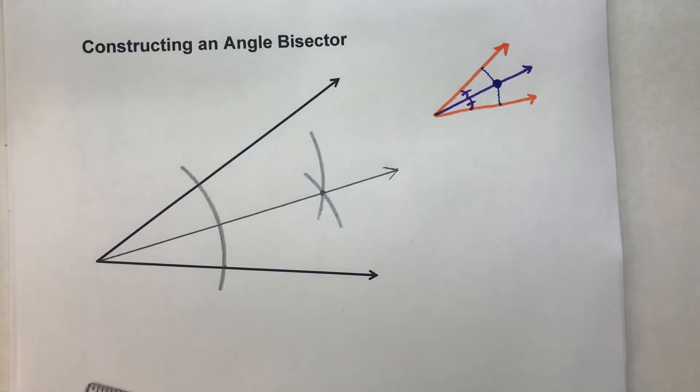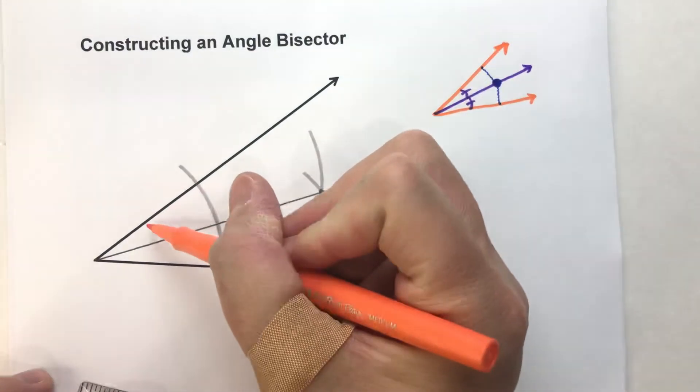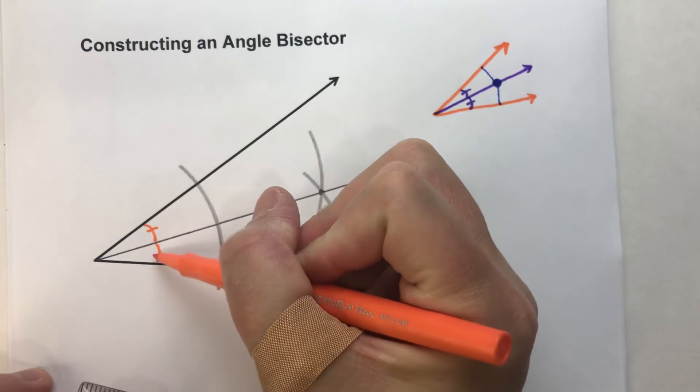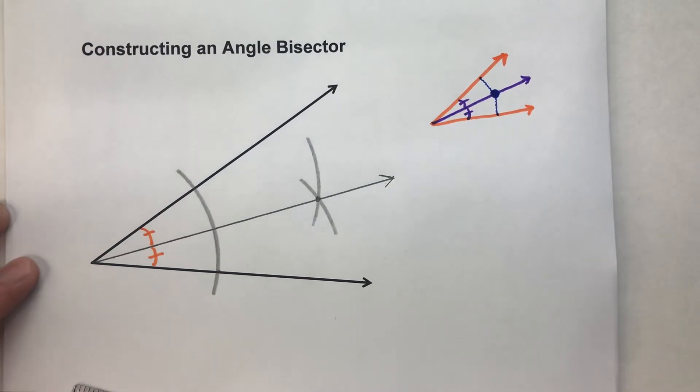And I can mark this as an angle bisector.